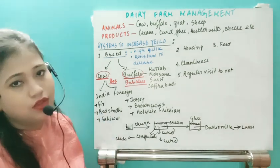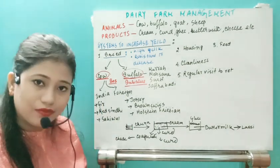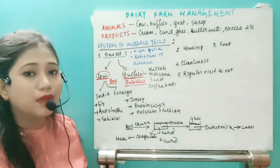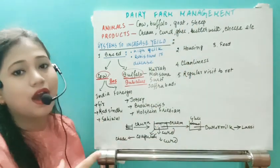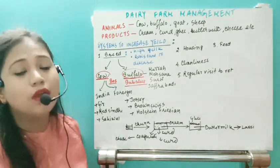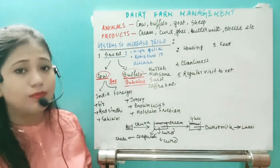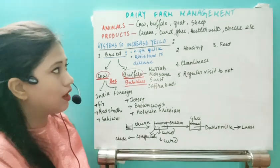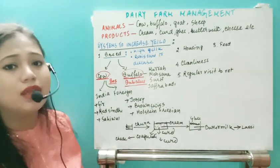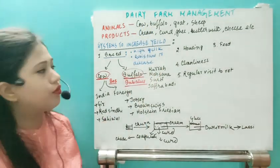In dairy farm management we can use both cow and buffalo. Sheep and goat can also be used for milk but they have dual purposes — from their fur we extract wool for carpets, shawls, and pashmina. So for purely milk production, cow and buffalo are the primary choices.